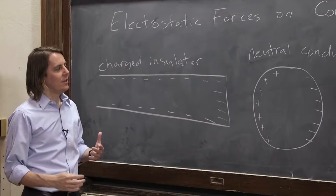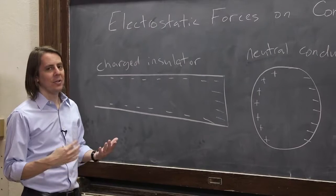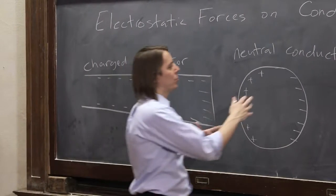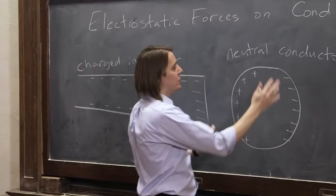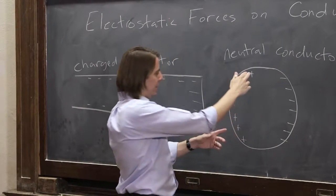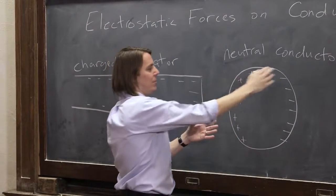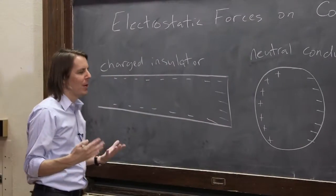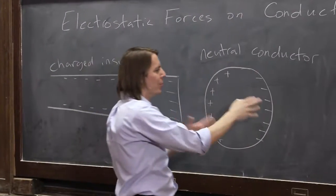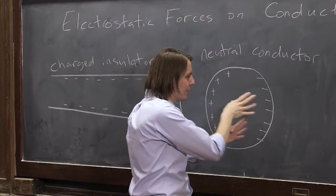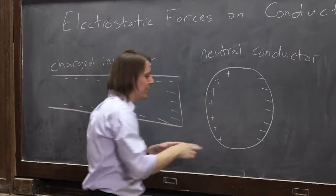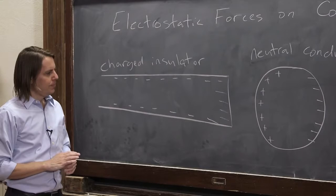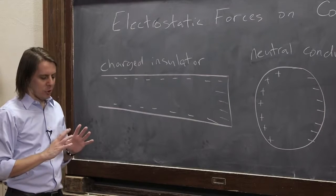Now, in a lot of cases it doesn't actually matter if it's the electrons — the negative charge — or the positive charge moving. If this were a conductor with positive charges that were mobile, then they would be attracted and come this way, and it would leave this side negative. But if we want to think microscopically about a metal, what really happens is the electrons build up here, which leaves exposed nuclei over there. So the charge will separate.